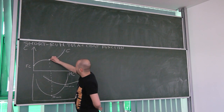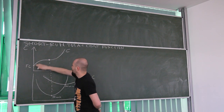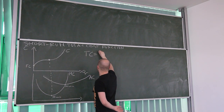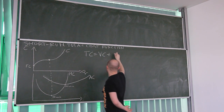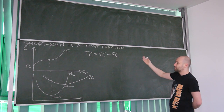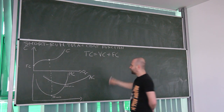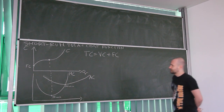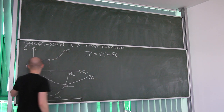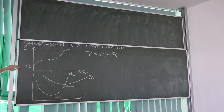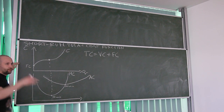First of all, here we have the total cost function. Total cost is made of variable cost and fixed cost. Fixed cost is the cost that the company endures even if the company is not producing. So when the level of production is zero, the company still needs to cover the fixed cost — like the cost of renting a factory.